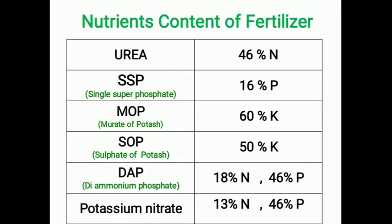For the calculation of fertilizer requirement, we must know the nutrient contents of the fertilizer. In the given chart, the percentage of nutrient content in Urea is 46% Nitrogen. SSP, that is Single Superphosphate, contains 16% Phosphorus. MOP, Muriate of Potash, contains 60% Potassium. SOP, that is Sulphate of Potash, contains 50% Potassium. In DAP, that is Diammonium Phosphate, it contains 18% Nitrogen and 46% Phosphorus.